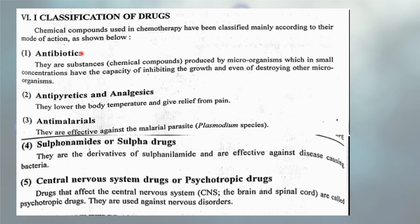Drugs can be classified according to their mode of action. They can be classified into antibiotics, analgesics, antimalarial drugs, sulfonamides or sulfa drugs, and central nervous system drugs or psychotropic drugs. Antibiotics are substances produced by microorganisms which, in small concentrations, have the capacity to inhibit the growth of and even destroy other microorganisms.